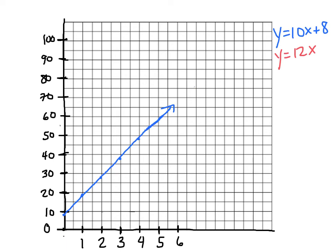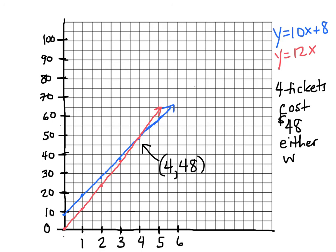So the red one has a Y intercept of 0 and a slope of 12. So that would be up 12 over 1, which would put us right about here. Up 12 over 1. Again, right here. Up 12. That would be a little bit higher than that. So 10, 12. So it would be like there. Up 12 and over 1. We're getting there. So for 3, that would be 36. And then there it is right there. 48. So when I draw my two lines, I end up with them crossing right here at 4 and 48, which is where they would match up. 4 tickets cost $48 either way.